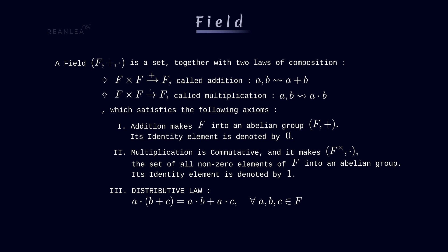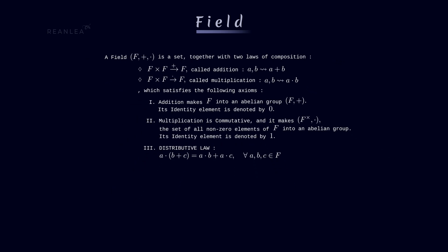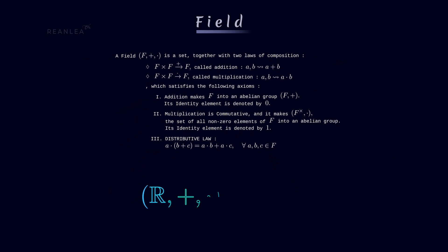Lastly, the elements of the field F obey the distributive law, which states that a times (b plus c) equals (a times b) plus (b times c), for all a, b, and c in F. As an example, the set of all real numbers together with addition and multiplication is a field.